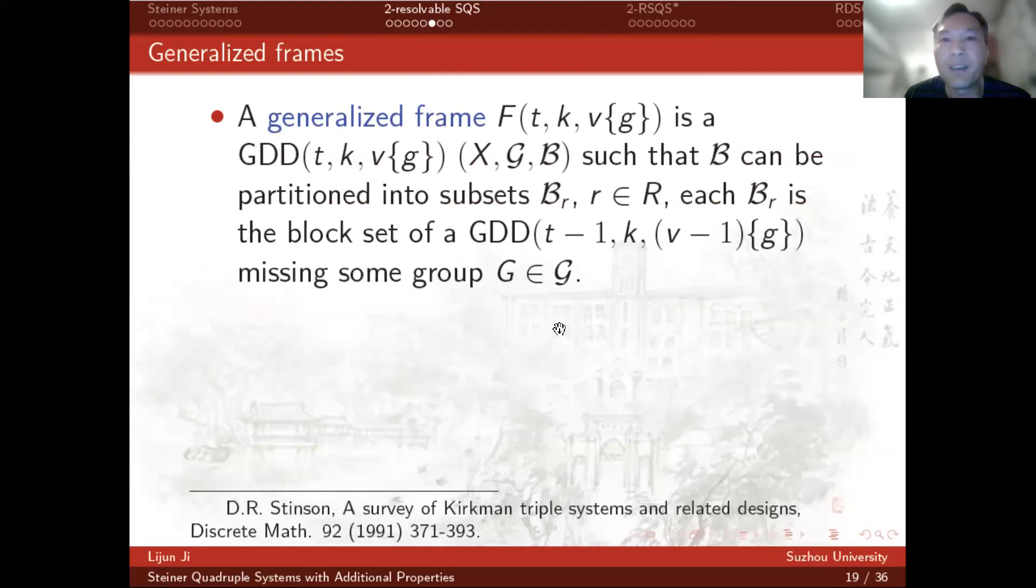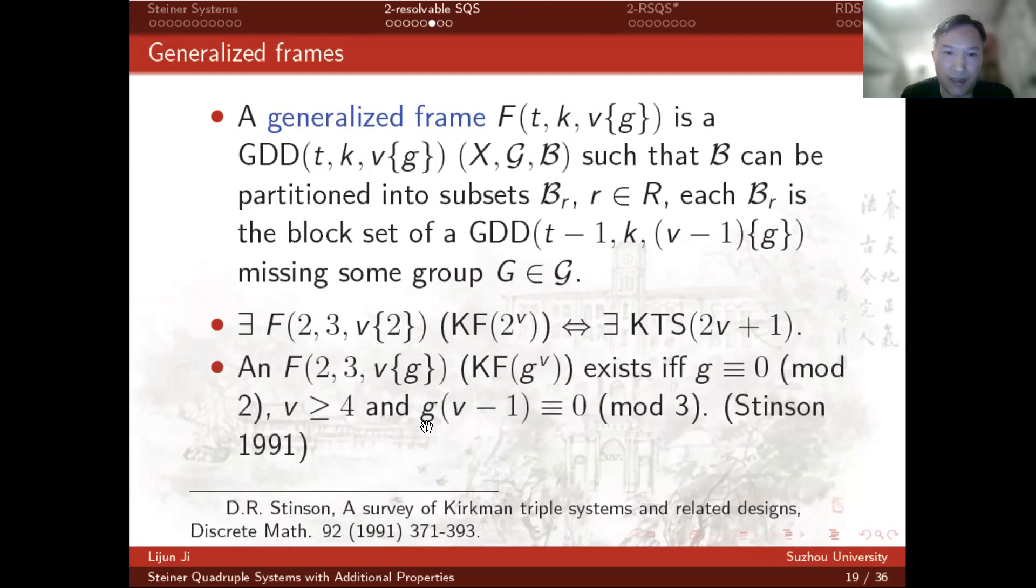A generalized frame is a GDD(t, k, v | g) such that the block set can be partitioned into subsets B_R. Each B_R is a block set of GDD of strength t minus 1 missing some group. And this frame is called a Kirkman frame. It is known that there is a Kirkman frame of this type if and only if there is a Kirkman triple system. Stinson showed that there is a Kirkman frame if and only if parameters g and v satisfy these two equations.